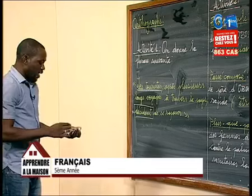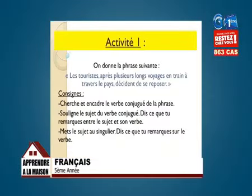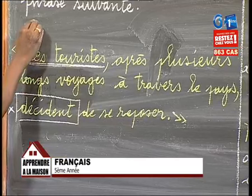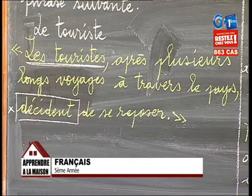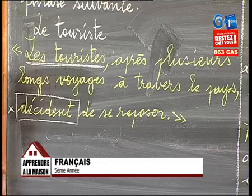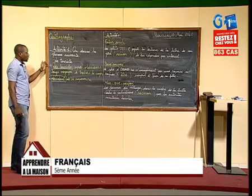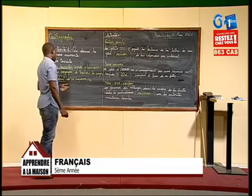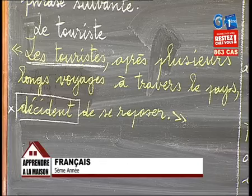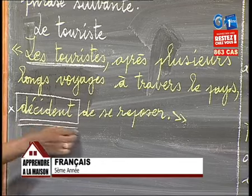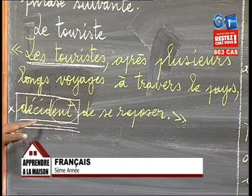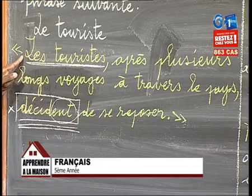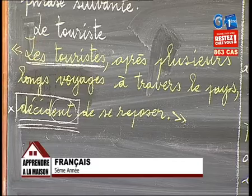On nous demande de mettre le sujet au singulier. Les touristes est au pluriel. Au singulier, on dira « le touriste ». Introduisons notre sujet singulier dans la phrase. On va dire : « Le touriste, après plusieurs longs voyages à travers le pays, décide de se reposer. » Arrêtons-nous au niveau du verbe. La terminaison est « ent », terminaison pluriel, parce que le verbe est conjugué avec le sujet « les touristes » qui est pluriel. Maintenant que notre sujet est singulier, il faut mettre le verbe en accord avec le nombre du sujet.